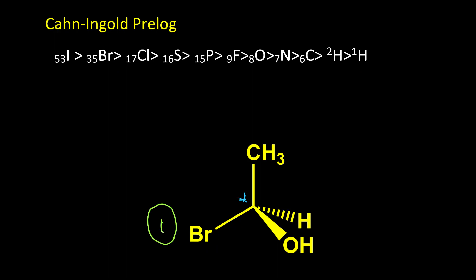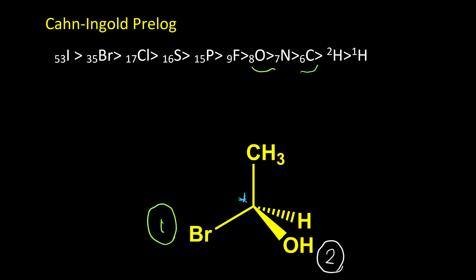So the highest priority has number one. After that, between oxygen and carbon, oxygen has higher priority comparing to carbon. So number two belongs to OH. Please keep in mind that for ranking these four groups we always look at the first atom. So if their first atoms are different, then we make a decision based on the first atom — we don't look at the rest of the atoms in our groups. Then between carbon and hydrogen, carbon has higher priority, so it's number three. And number four, or lowest priority, is the hydrogen atom.